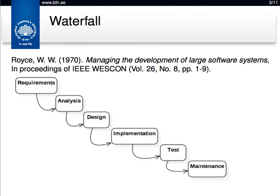The waterfall model was created in 1970 in a paper by Royce. The idea he presented was that you do requirements engineering, and once you're done with requirements engineering, you throw that over the fence to analysis, which then does analysis. Once it's done with that, you throw it over to design, implementation, testing, and then you release it and go into maintenance mode. There is forward movement only in this — you do one thing first and then you're done with it.